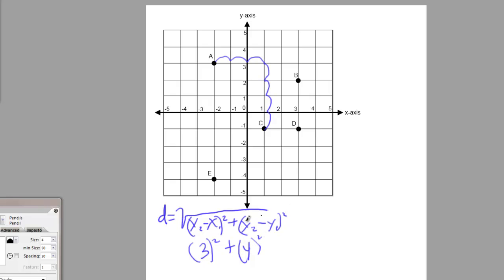Don't forget to bring your squares with you. So d equals the square root of 3 squared plus 4 squared. 3 squared, 3 times 3 is 9. 4 squared, 4 times 4 is 16. So d equals the square root of 9 plus 16. 9 plus 16 is 25. So the distance between these two points is the square root of 25.